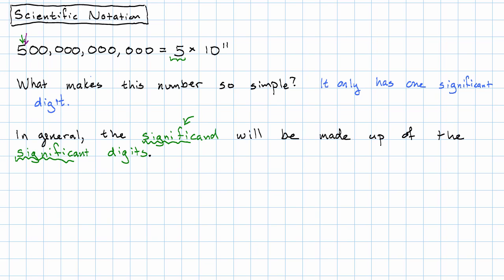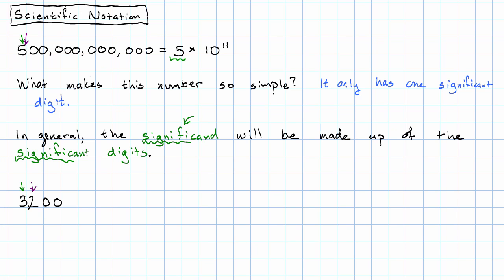So the significand is made up of the significant digits. Let's think about how to do that by looking at a number with more than one significant digit. I'm going to choose 3200 with two significant digits. I could look at the place that the least significant digit is in. So my significant digits are just 32, and then this will be times 10 to the second.